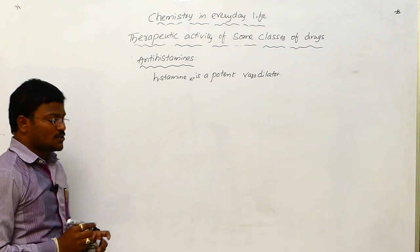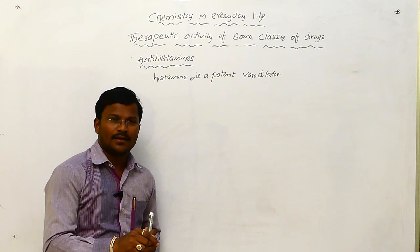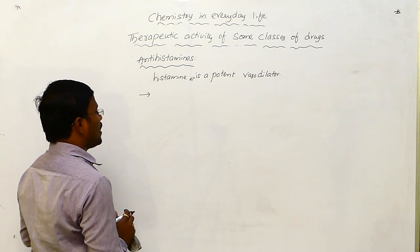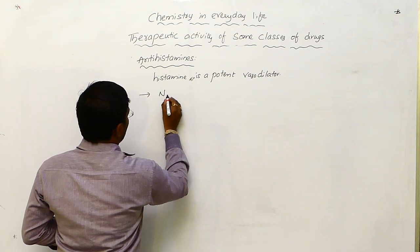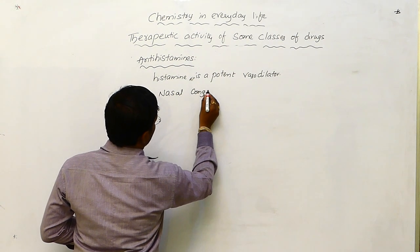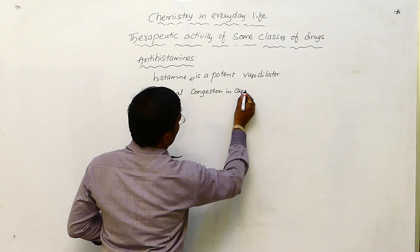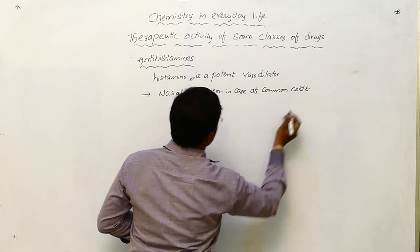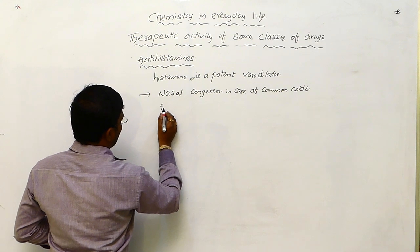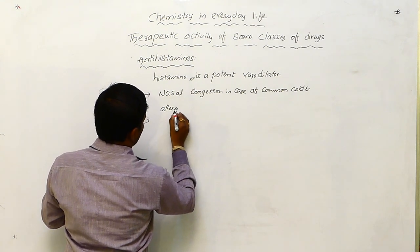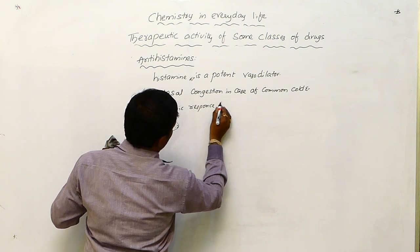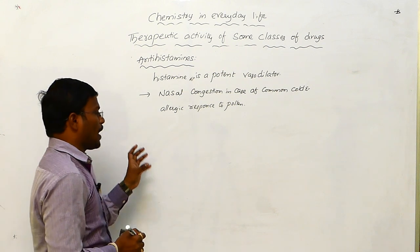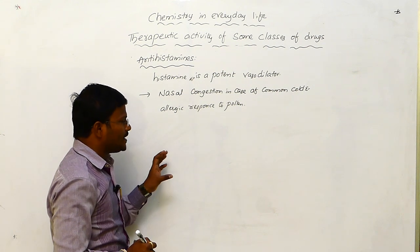Histamine also contracts smooth muscle which are present in bronchia and also other muscles of the body. Some of the responses associated with histamine are: they participate in nasal congestion in case of common cold, and also they are involved in allergic response to pollen.